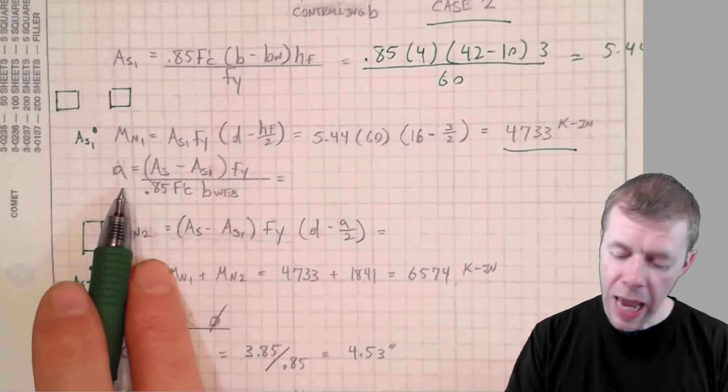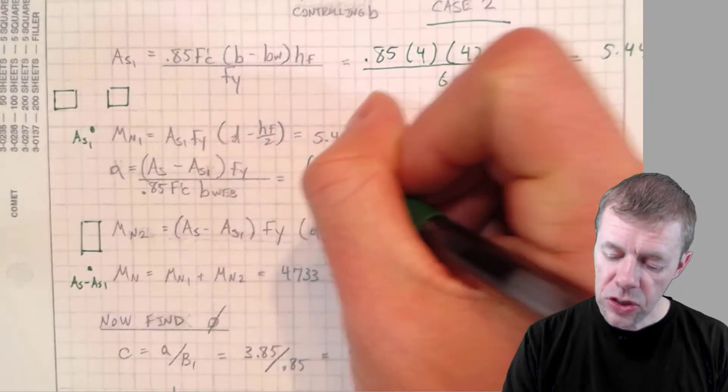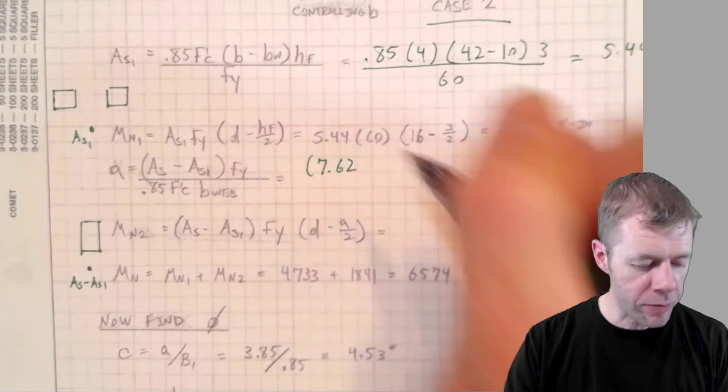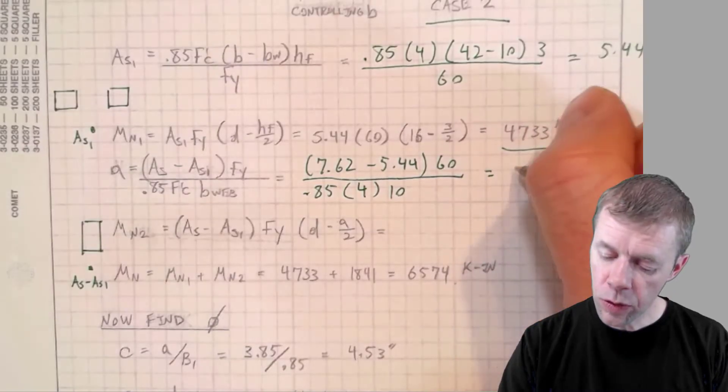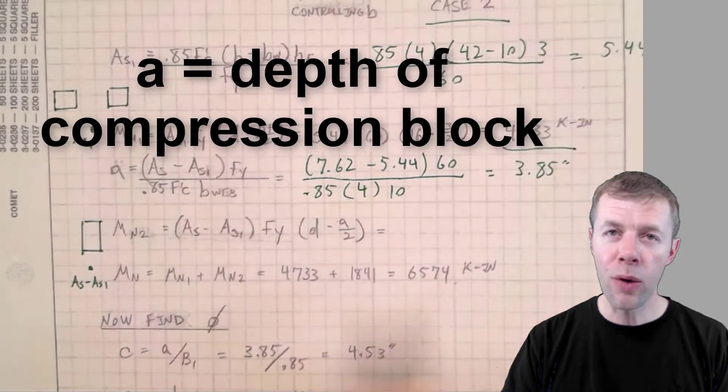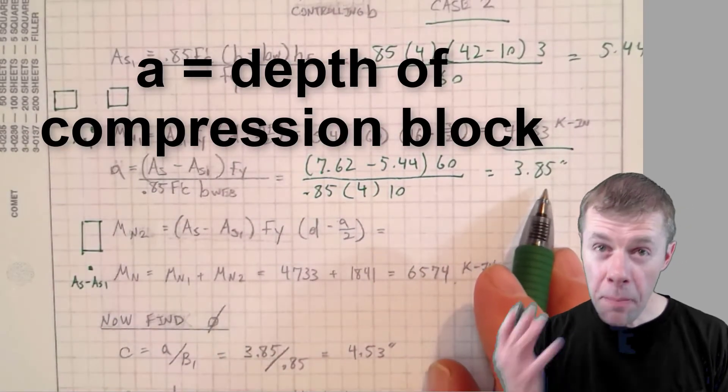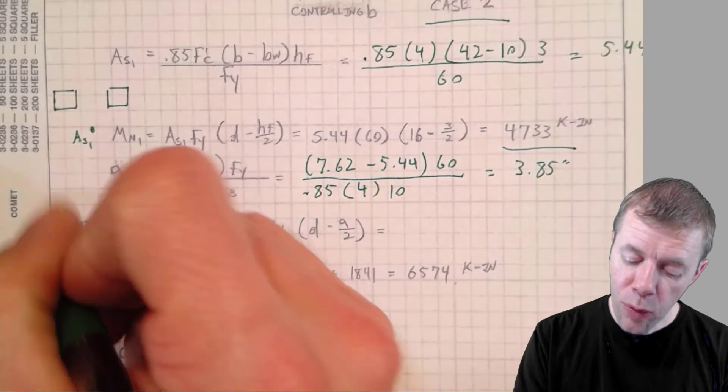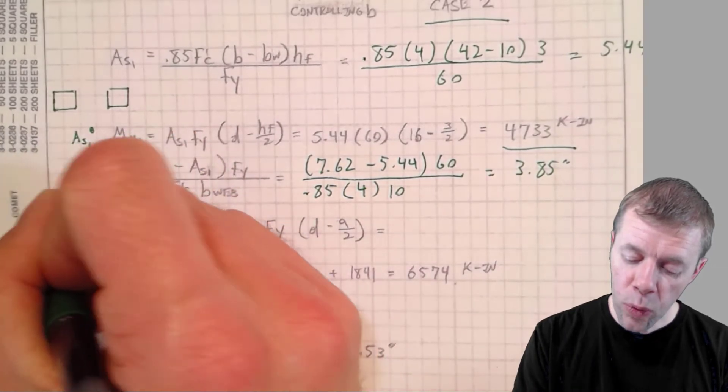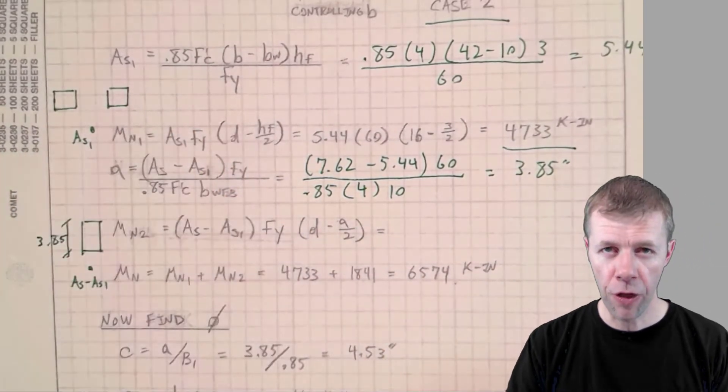To do that, I've got to calculate what my A is. So that's 7.62. That's my total amount of my steel. That whole thing is equal to 3.85 inches. That is my real depth, not my mystical depth. That is my real, real depth of that section right there, 3.85.